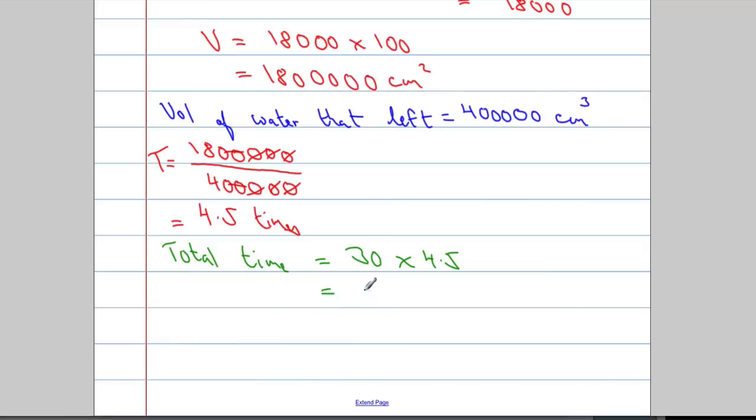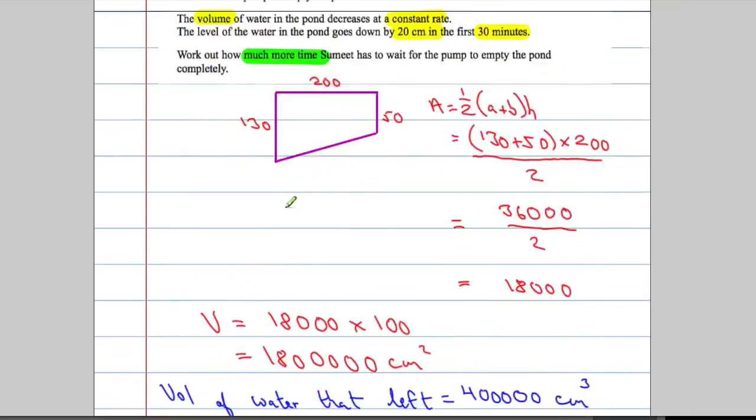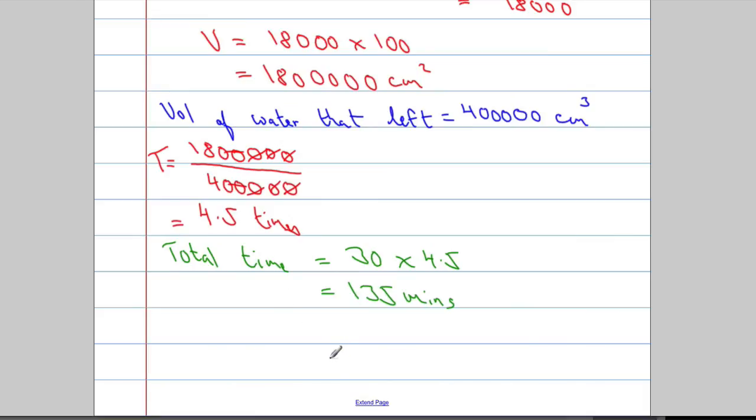But let's go back to the question: work out how much more time Summit has to wait. They've waited 30 minutes already, that means time left is going to be the total time take away the time that's already passed, which gives us 105 minutes.